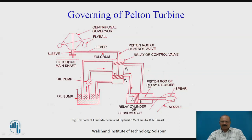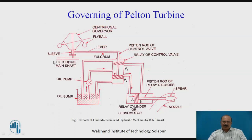This is the piston rod of the relay cylinder, which controls the water flow. The shaft output from the Pelton turbine is coupled to this shaft — the turbine main shaft. This part is coupled with the turbine shaft and this part is coupled with the governor.